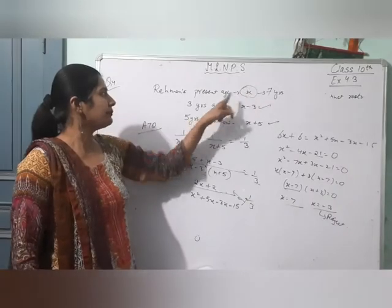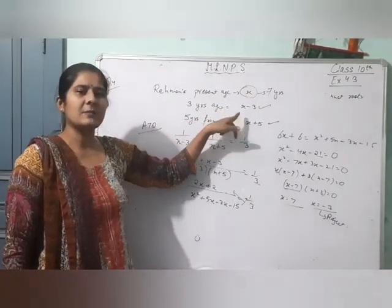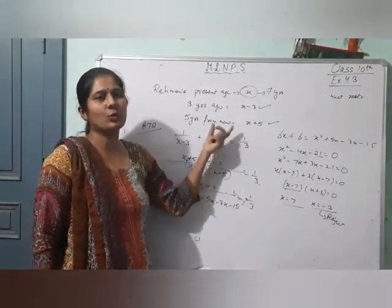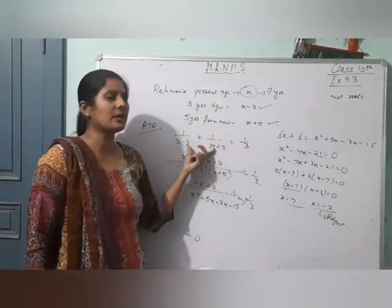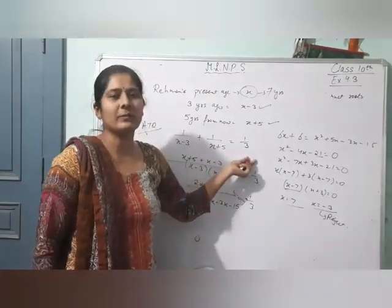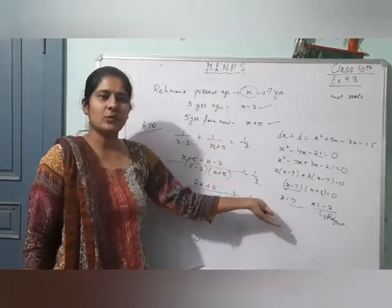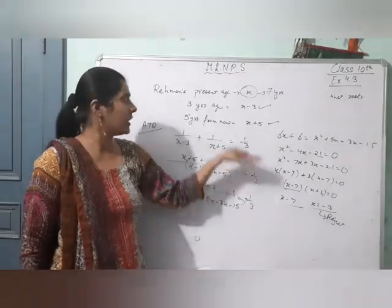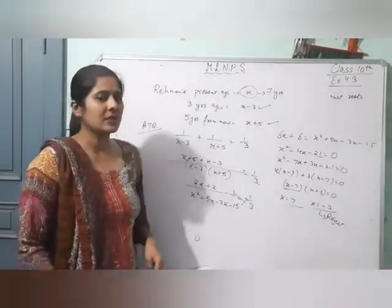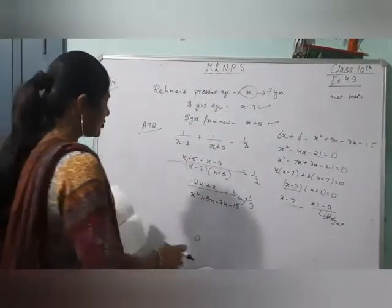I think samajh aa gaya hoga. Present age x liya, 3 saal pehle ki age x minus 3, 5 saal baad ki age x plus 5. Dono ka reciprocal karke unka sum karna hai, barabar diya hua hai 1 by 3. Just form the equation, calculate the answer.